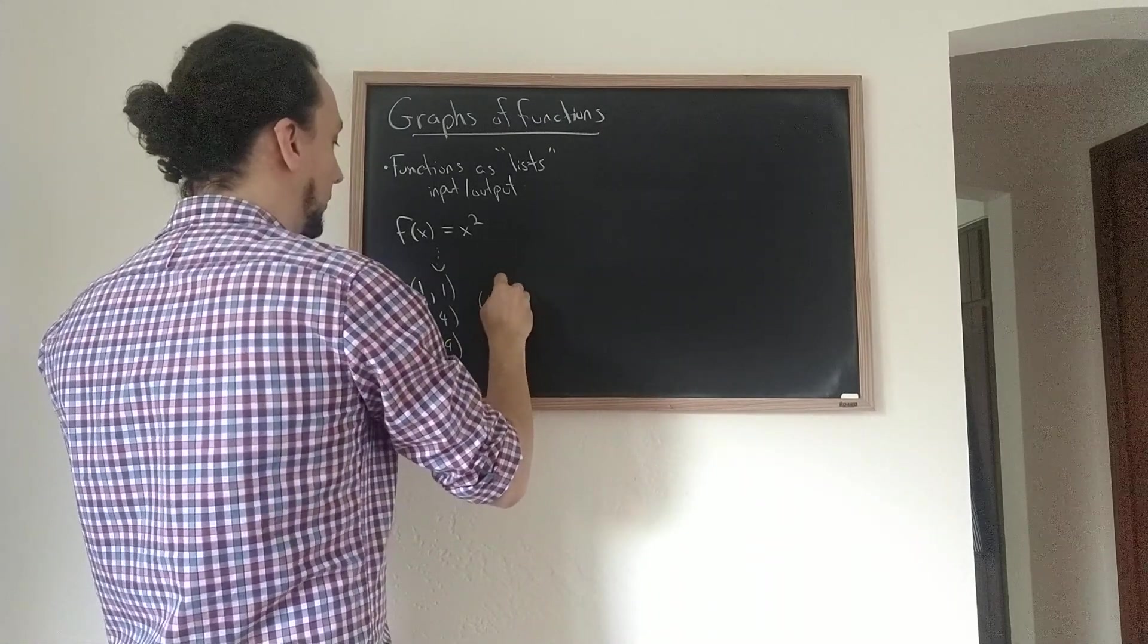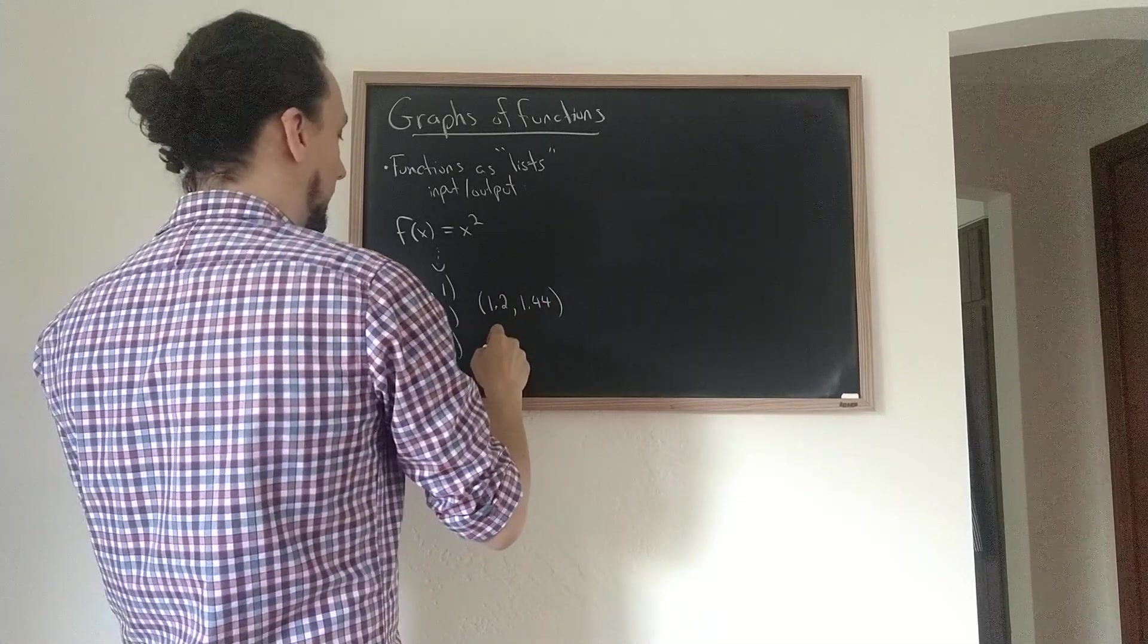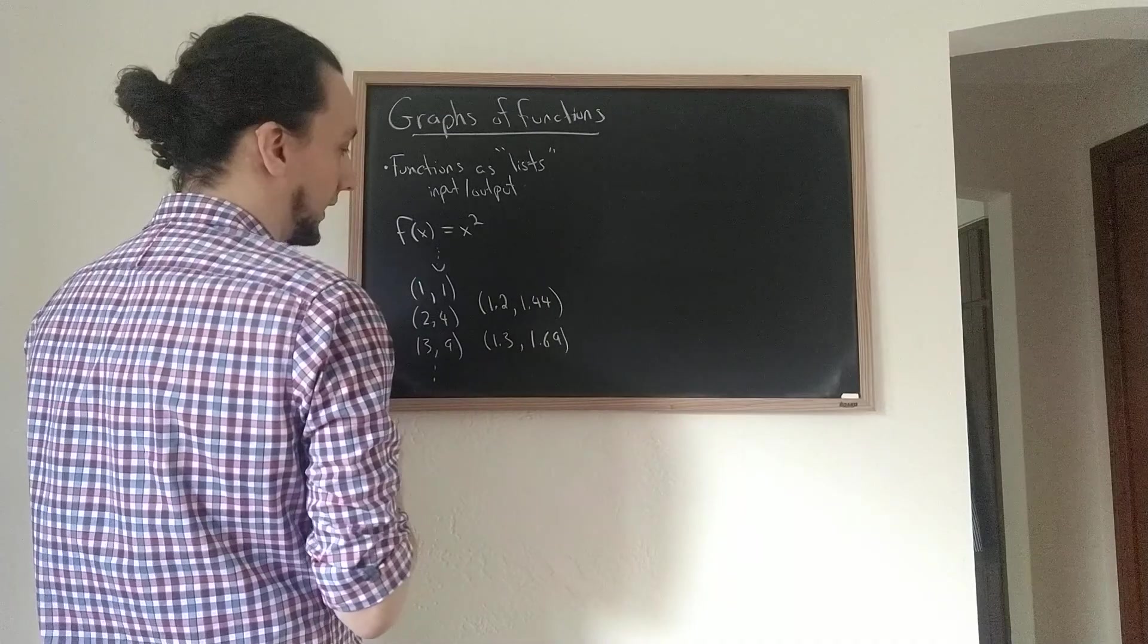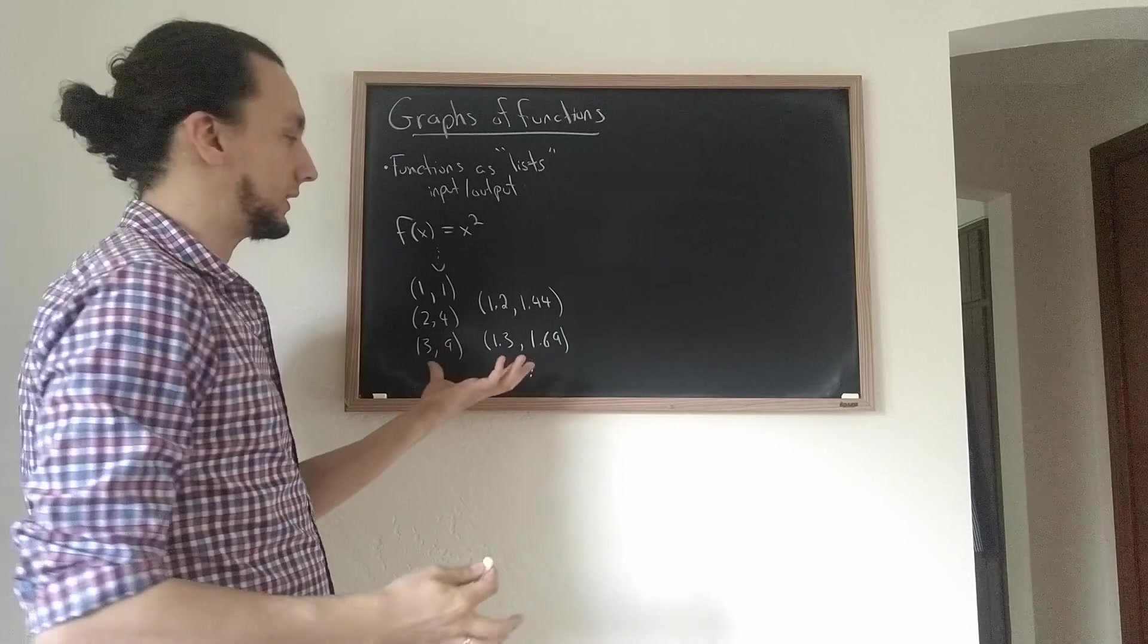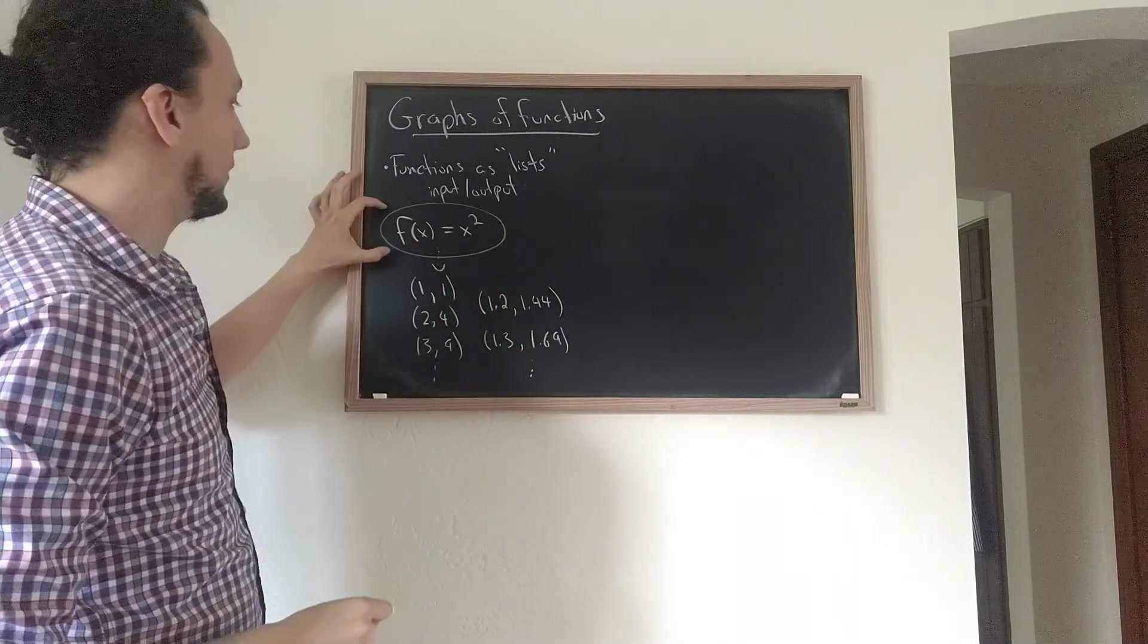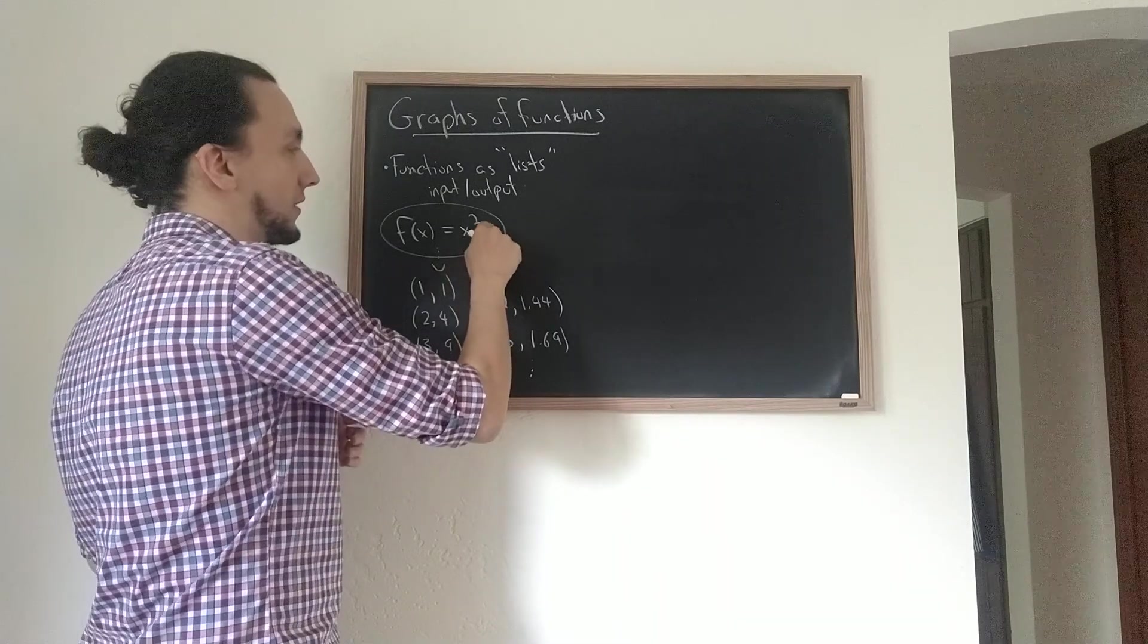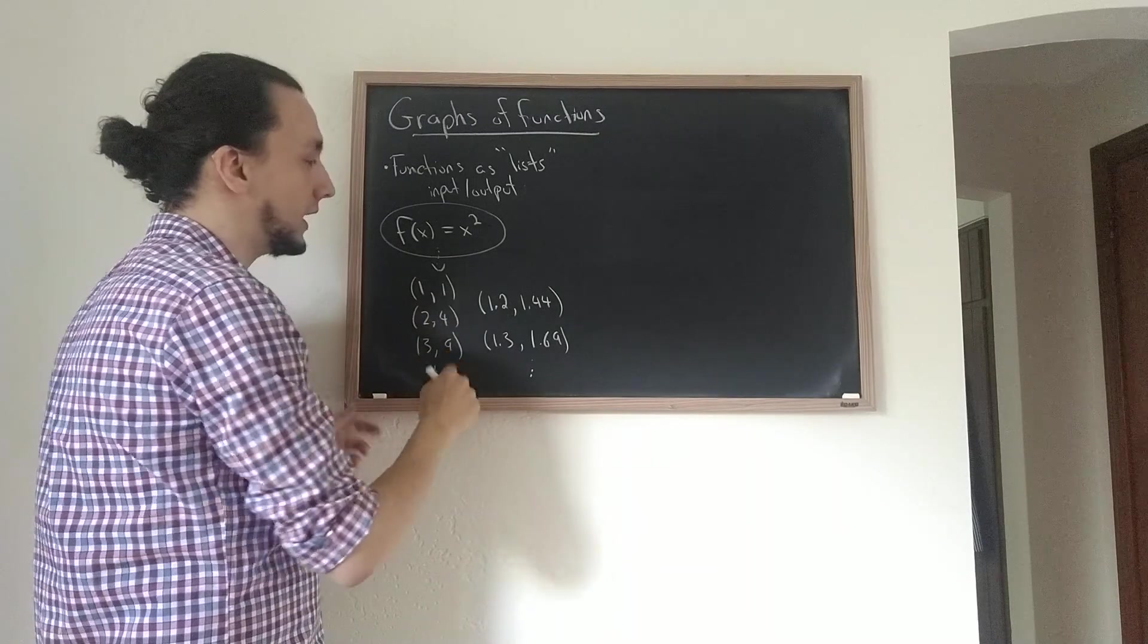For example, if I input 1.2 I want to output 1.44, or if I input 1.3 I want to output 1.69. I just can't possibly write down this entire list of inputs and outputs, so it seems like this is a much better way of capturing the function, even though it's sort of illicitly implying that the thing that I'm doing is squaring.